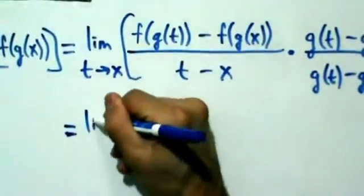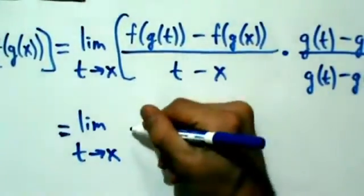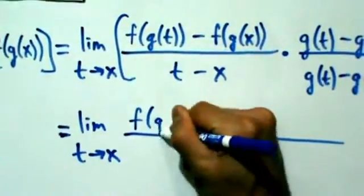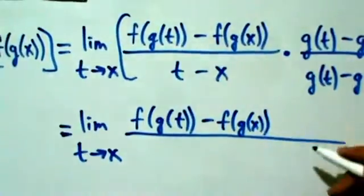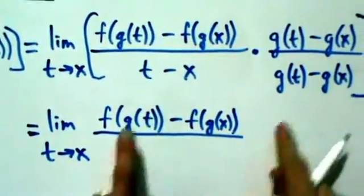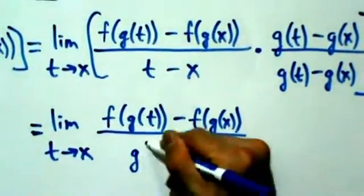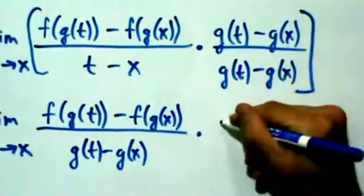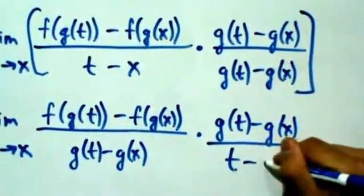Continuing with this, we have the limit as t approaches x of f(g(t)) minus f(g(x)). What I'm going to do is just swap the denominators. So this is going to be [f(g(t)) − f(g(x))] over [g(t) − g(x)], and then over here we're going to have [g(t) − g(x)] all over [t − x].